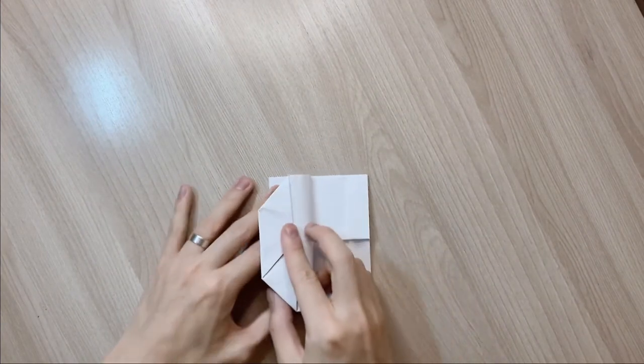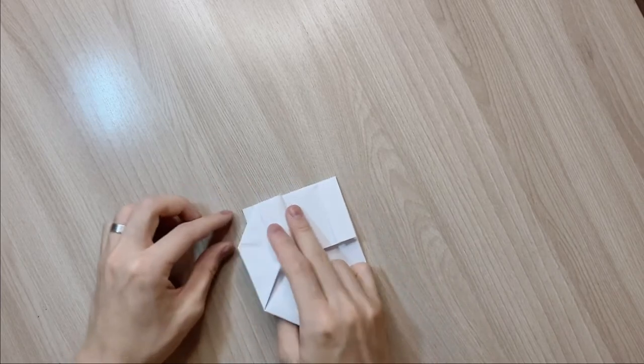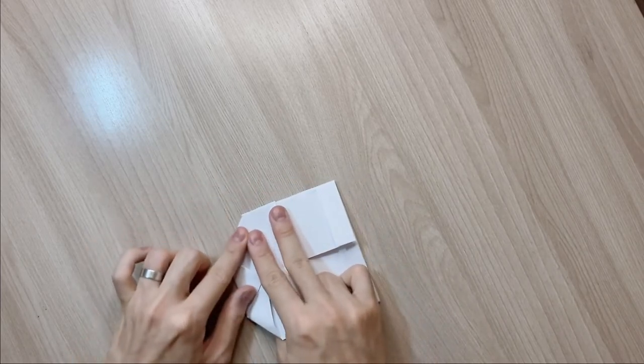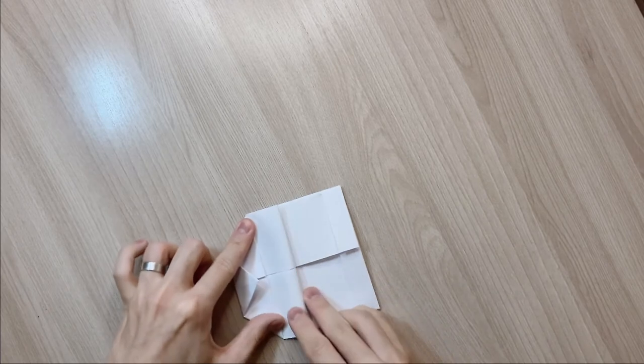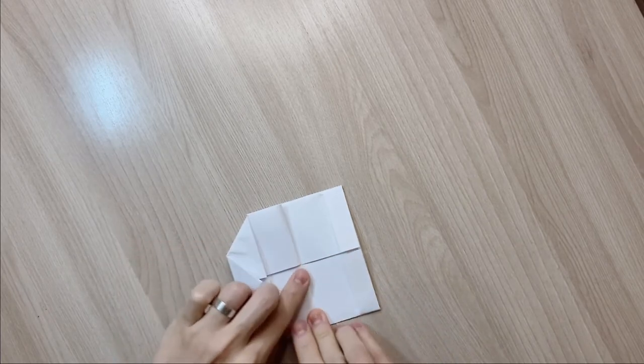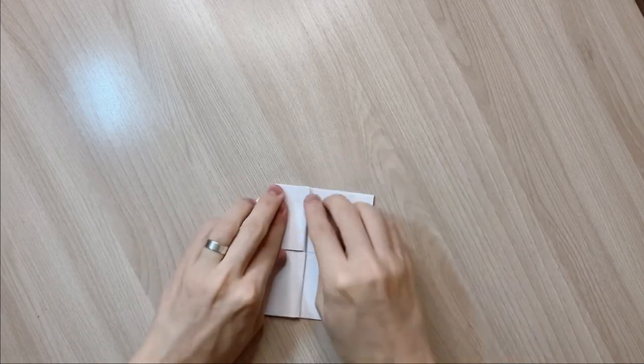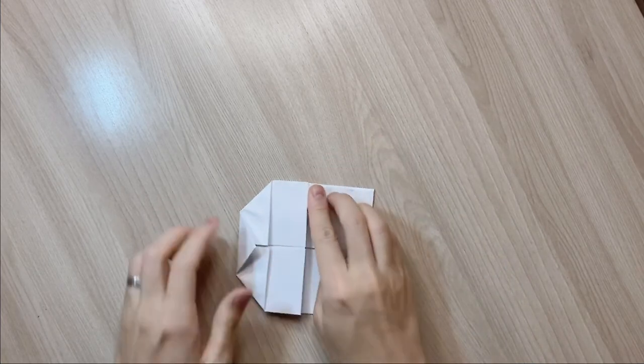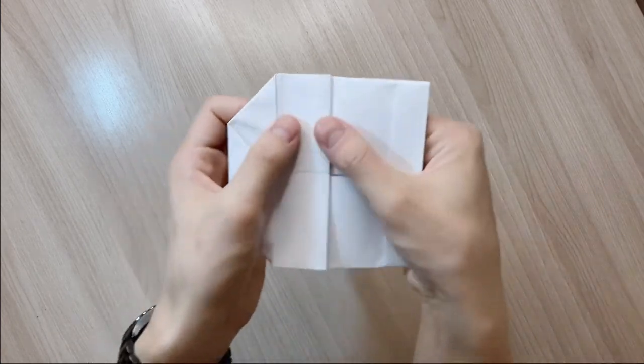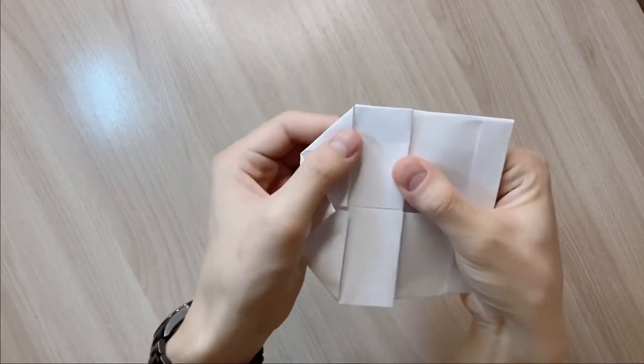And next, you're gonna fold everything towards the other side. And as you're doing that, you can see here that the vertical line matches with the edge of the paper underneath. And also the corners, they're sitting on top of each other.